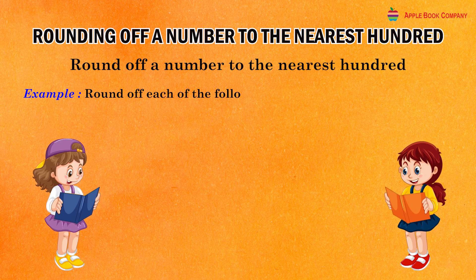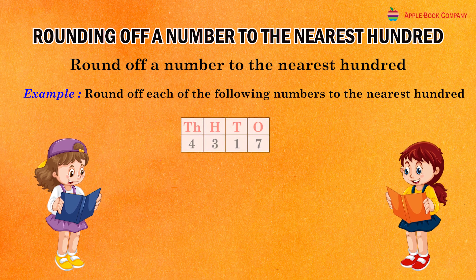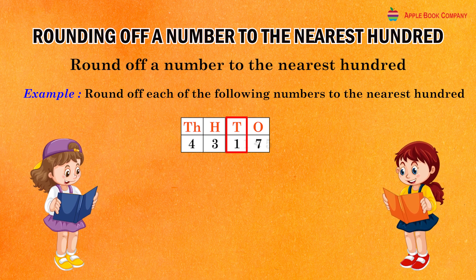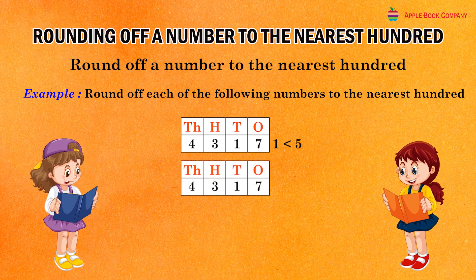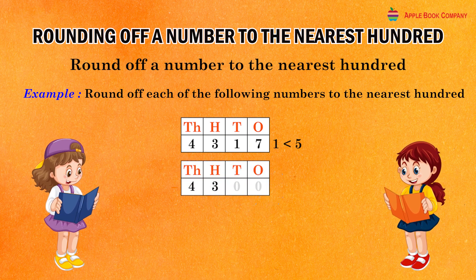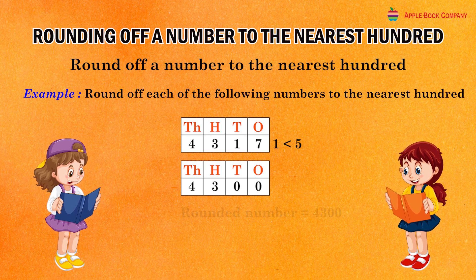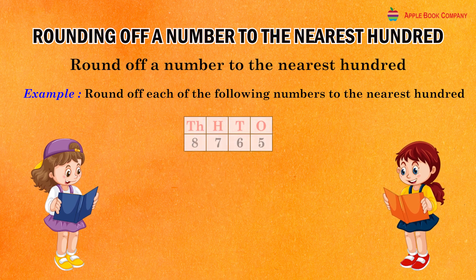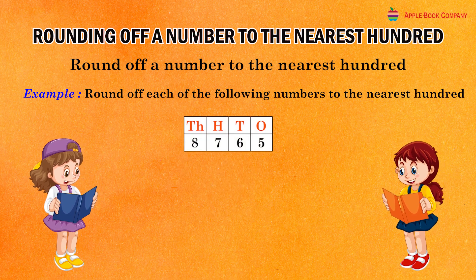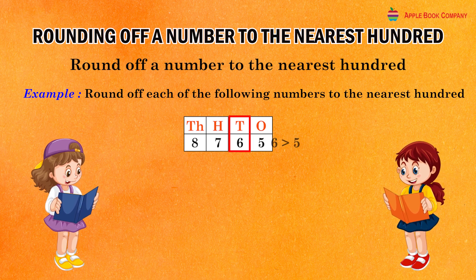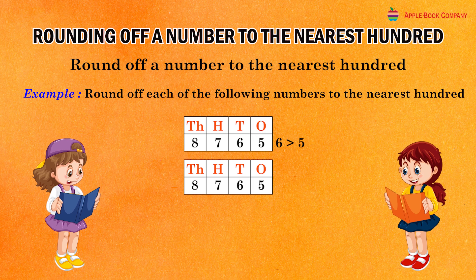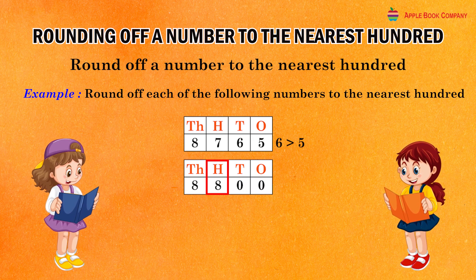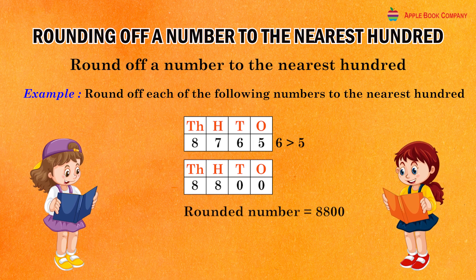Example: Round off each of the following numbers to the nearest hundred. In the given number 4317, the ten's digit is one which is less than five. So, replace each one of the tens and one's digits by zero and keep the other digits as they are. Rounded number: 4300. In the given number 8765, the ten's digit is six which is greater than five. So, replace each one of the tens and one's digits by zero and increase the hundred's digit by one. Rounded number: 8800.